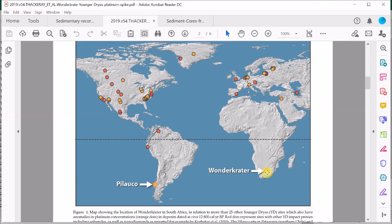Now the first thing to note is that Wonderkrater has got nothing to do with the impact. In fact, it's not even an impact crater. It's just the name of a small region in South Africa near a spring on an ancient flood plain.